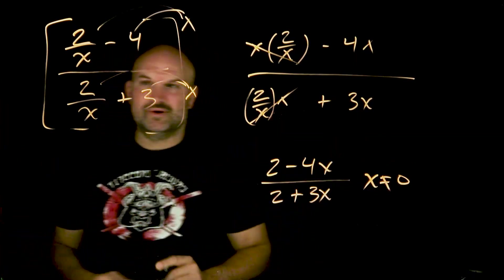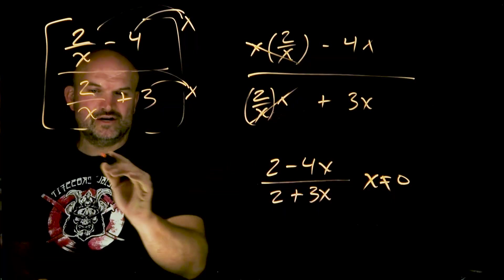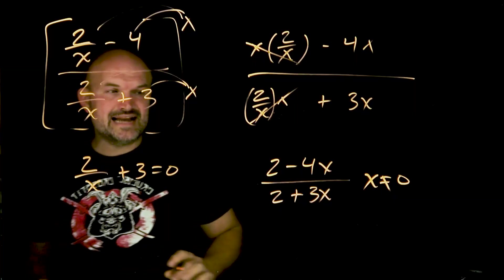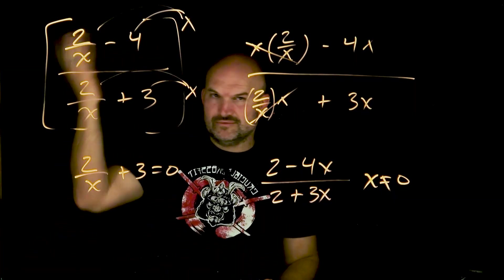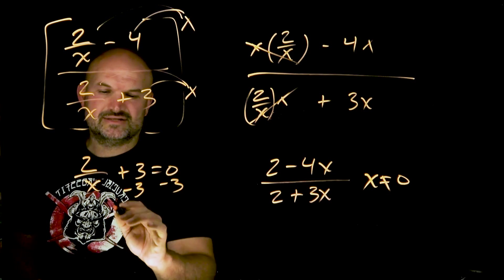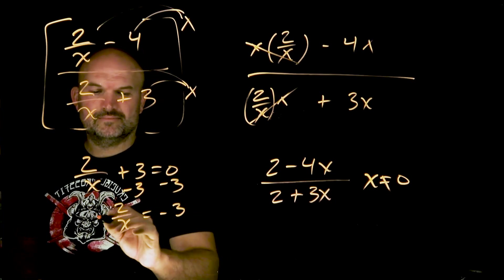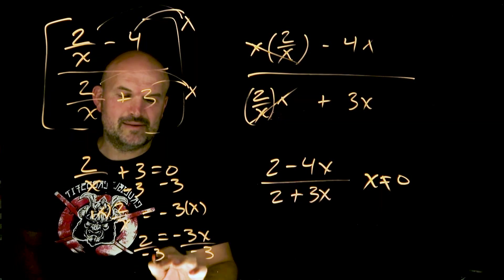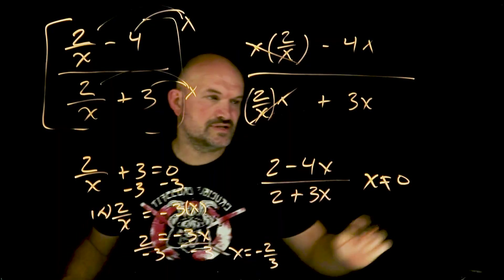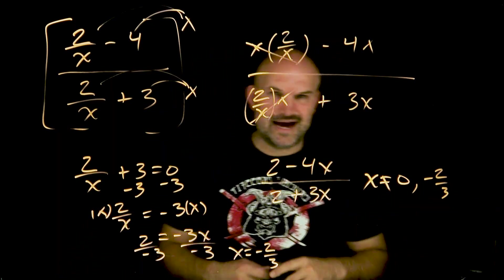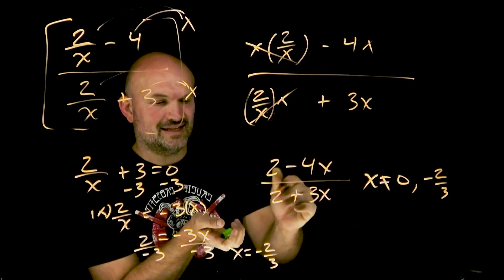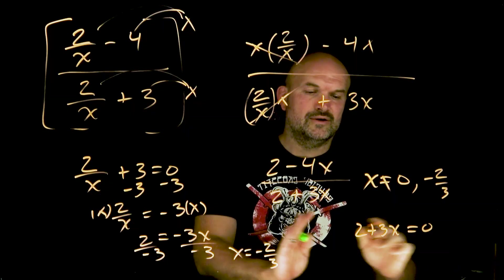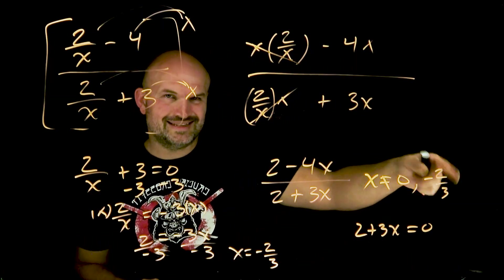The next thing we want to do is take a look at our solution. We cannot have this denominator equal to 0 — 2 over x plus 3 cannot equal 0. Because if this denominator equals 0, you can't divide by 0. So I have 2 over x equals negative 3. Multiply x on both sides: I get 2 equals negative 3x. Divide by negative 3: x is equal to negative 2 thirds.